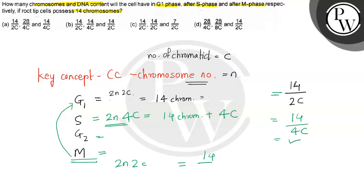it will be 2N2C at the end of M phase. So again, it will be 14 by 2C. So at the end of mitotic M phase, it is this.